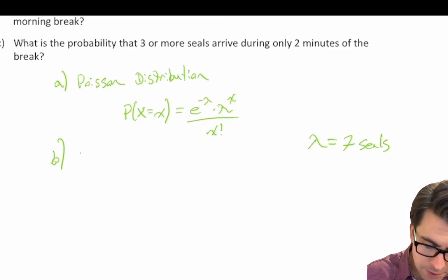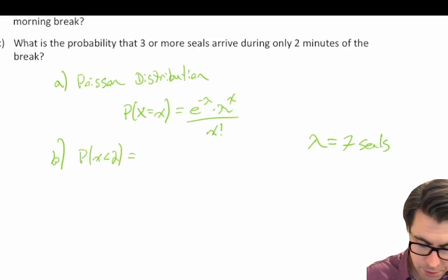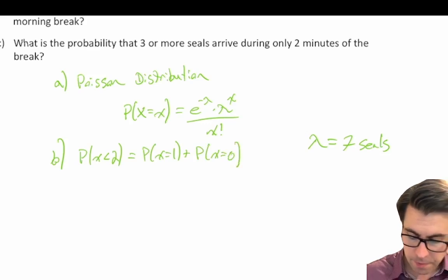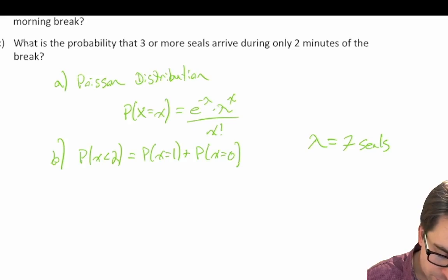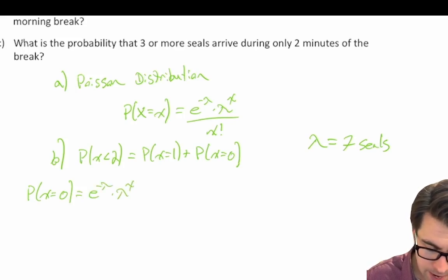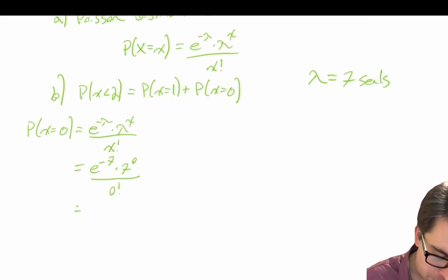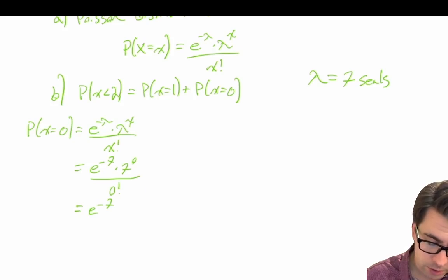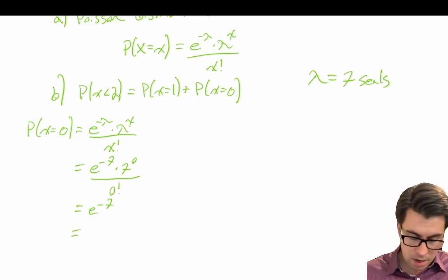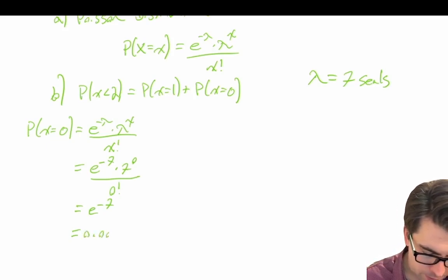The probability that X is less than 2 equals the probability that X equals 1 plus the probability that X equals 0. Let's solve for P(X=0): e to the power of negative 7, times 7 to the power of 0, divided by 0 factorial — which simplifies to e to the power of negative 7, giving us 0.0009119 rounded to four decimal places.